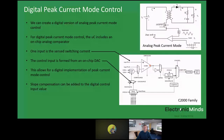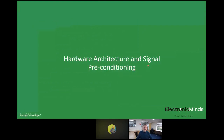That gives background on digital control structures. Let's now discuss hardware architecture and signal preconditioning. Consider a high-voltage converter — for example, a phase-shifted full bridge regulating 400 V DC output — where the microcontroller ADC reference spans 0 to 2.5 V. You obviously can't connect those directly, so you need a signal chain between the 400 V system and the microcontroller ADC input to precondition that analog signal.